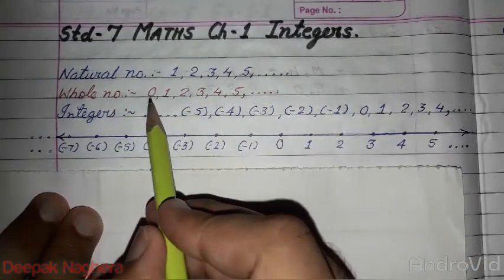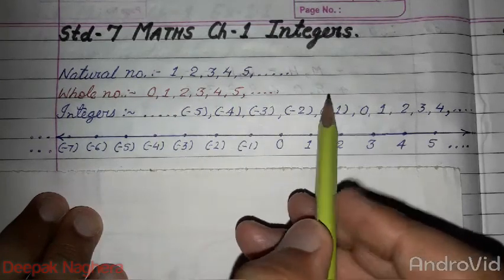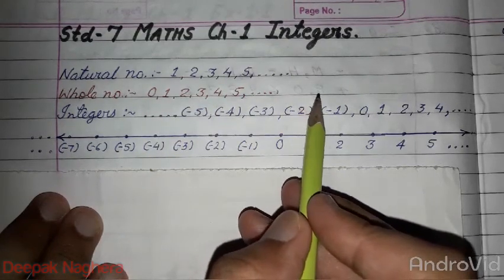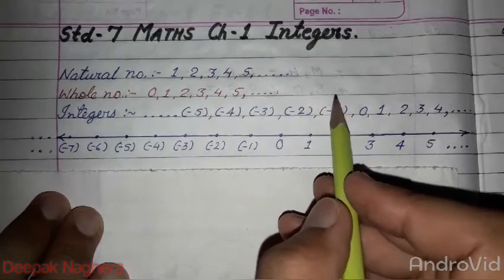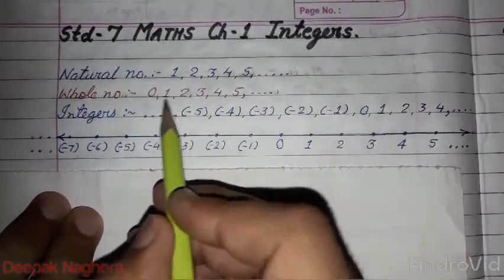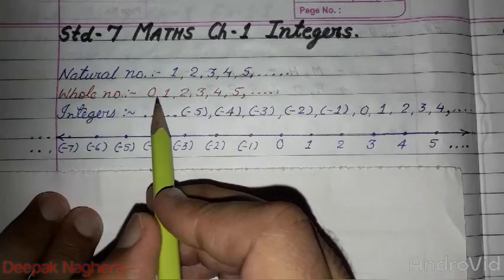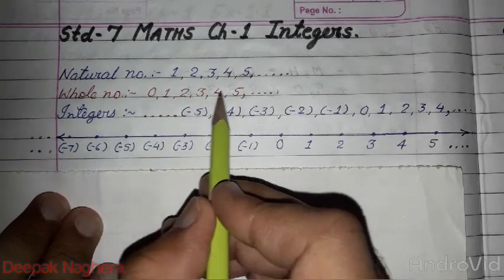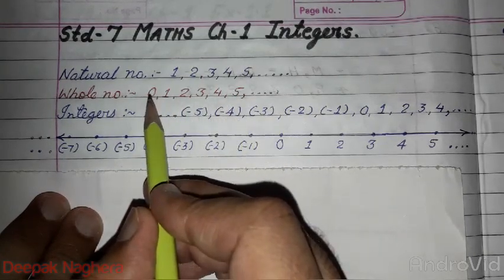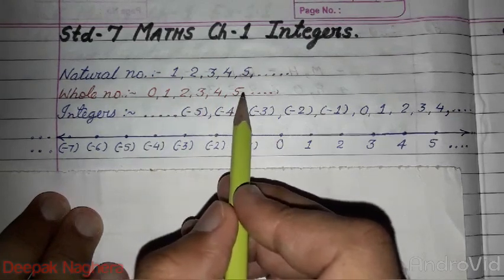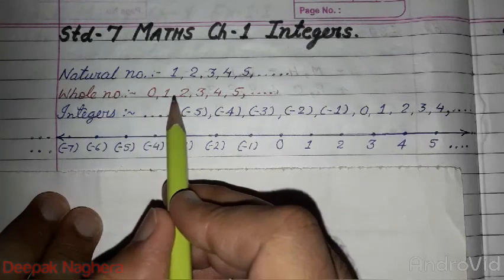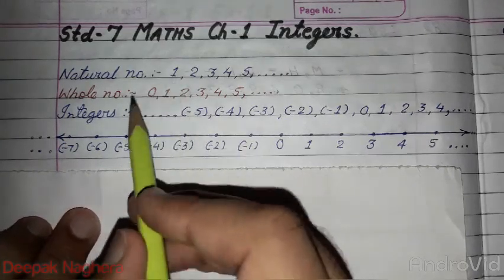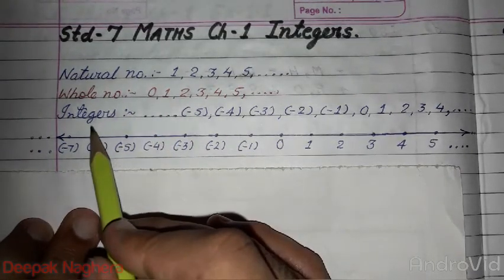But there is no greatest number. Similarly with whole numbers: 0, 1, 2, 3, 4, 5, 6. The smallest whole number is 0, but the greatest whole number we cannot find out because there are infinite whole numbers. Whole numbers include zero plus natural numbers. So whole numbers mean zero and all natural numbers 1, 2, 3, 4. The only difference is zero.